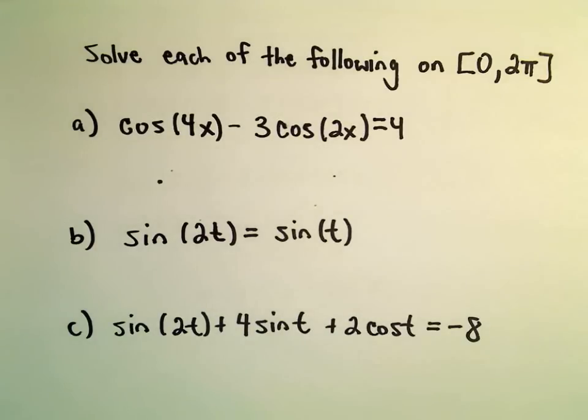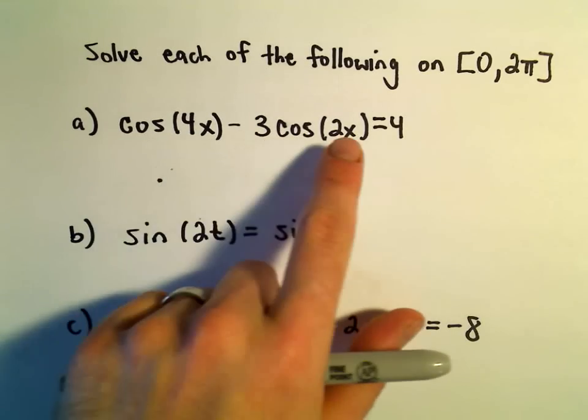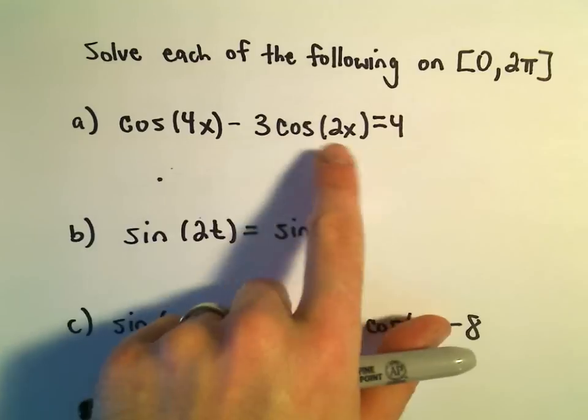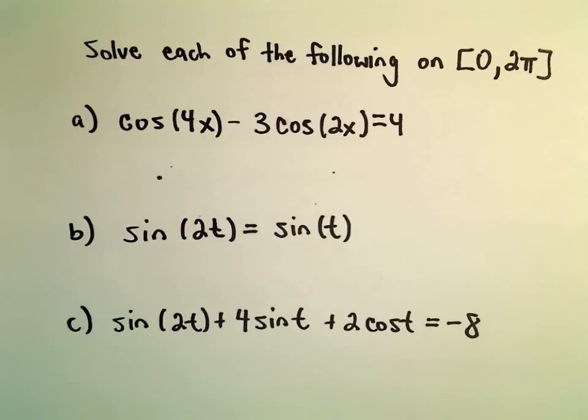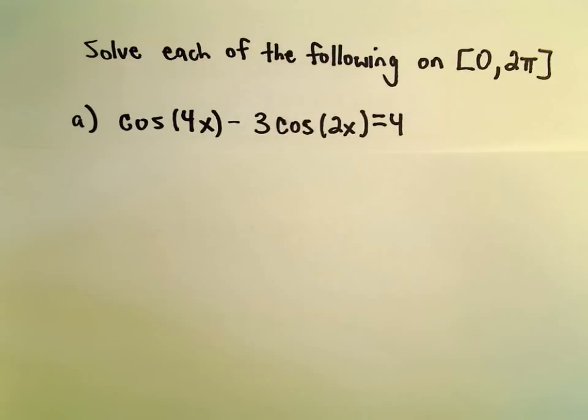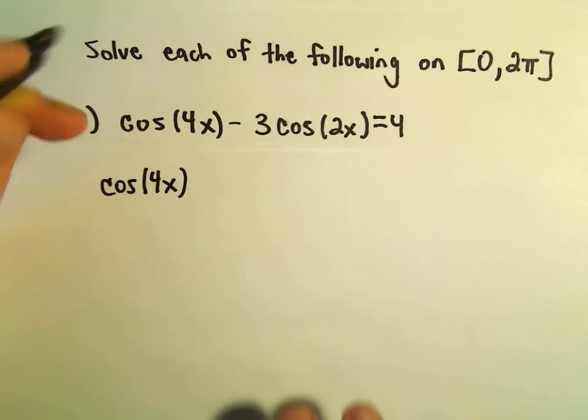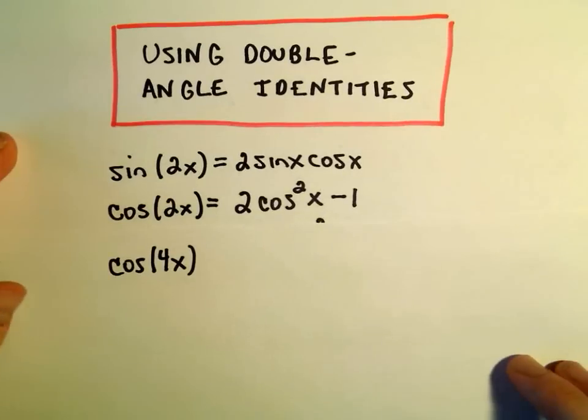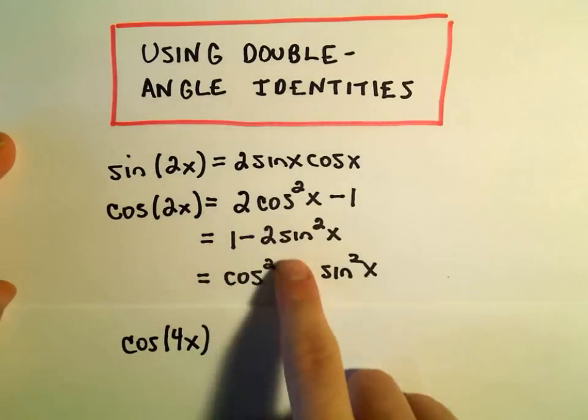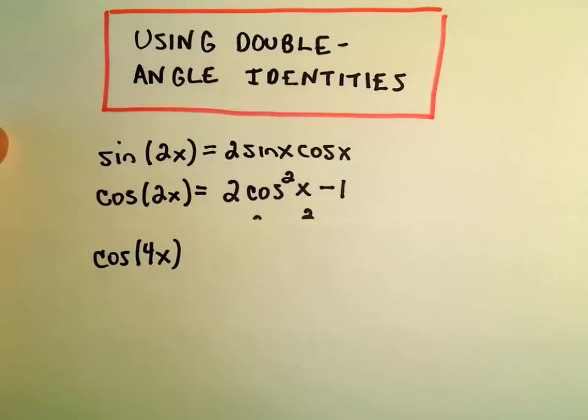If I saw a problem like this, the first thing I would think is maybe I can somehow make the insides the same. Instead of having 4x and 2x, maybe we can make them a little more similar. And what I'm going to do is rewrite cosine of 4x. I can really break that apart using our identity. The way I think about this identity, there's three to use here, but our original problem only had cosines. So I'm going to pick the first one just to keep everything involving cosines.